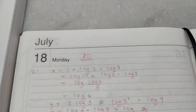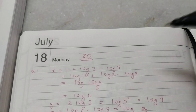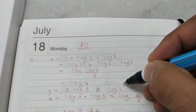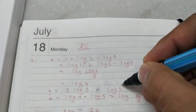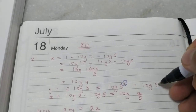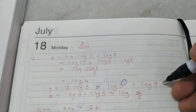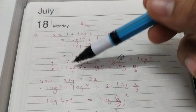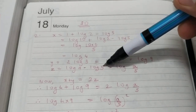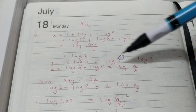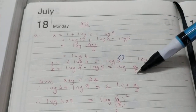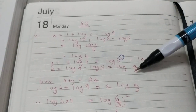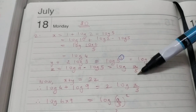Similarly, y — the 2 coefficient becomes the square and that becomes log 9. Now z is log a minus log 5, which becomes log(a/5) because subtraction is division here.